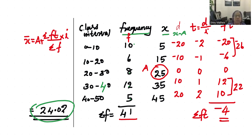Substituting the values: a is 25, sigma Fd' is negative 4, i is 10, and sigma F is 41.